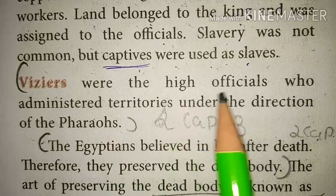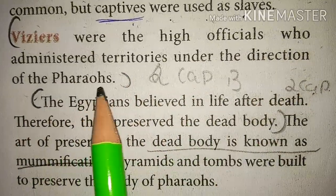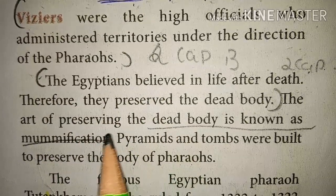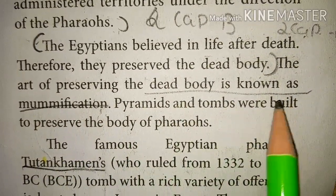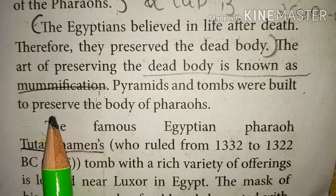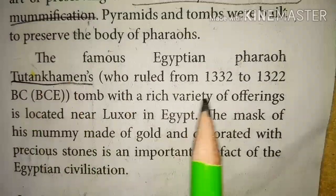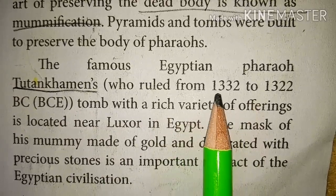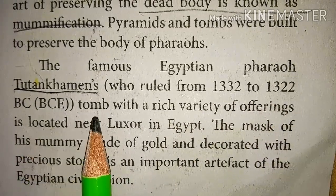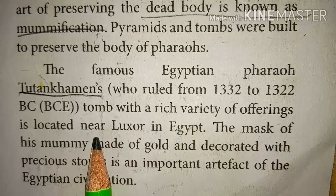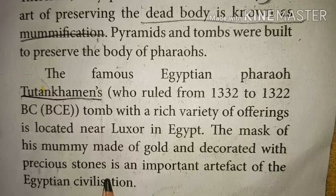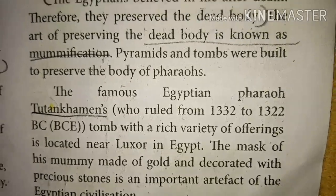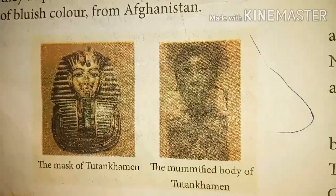Viziers were the high officials who administered territories under the direction of the Pharaoh. The Egyptians believed in life after death, and therefore they preserved the dead body. The art of preserving the dead body is known as mummification. Pyramids and tombs were built to preserve the bodies of Pharaohs. The famous Egyptian Pharaoh Tutankhamen ruled from 1332 to 1322 BC. His tomb, with a rich variety of offerings, is located near Luxor in Egypt. The mask of his mummy, made of gold and decorated with precious stones, is an important artefact of the Egyptian civilization.